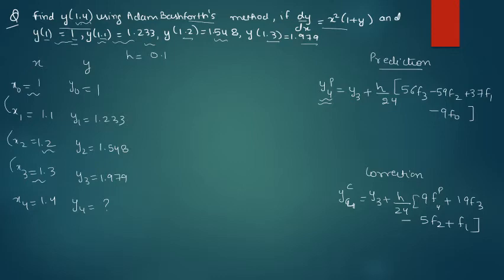So x naught and y naught is given, so what is your f(x,y)? dy/dx is x squared (1 plus y), correct? So that means your f naught, these values are for x naught, y naught, so your f naught will be x naught squared (1 plus y naught). So x naught is 1, y naught is also 1, so 1 squared into 1 plus 1, that means 2.